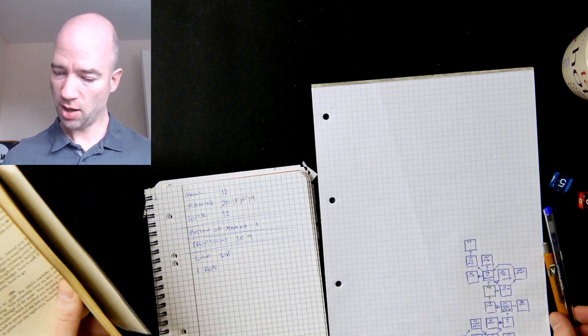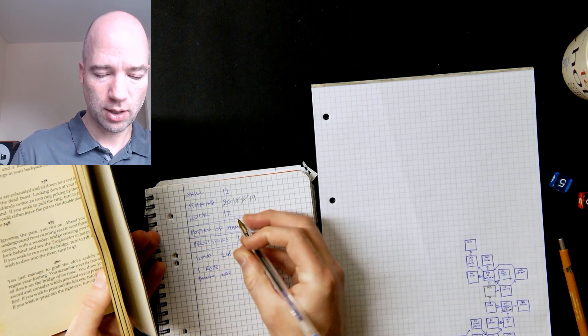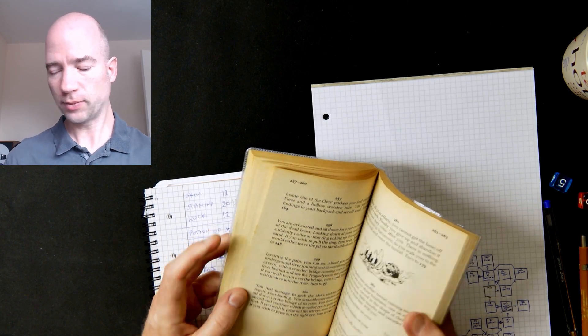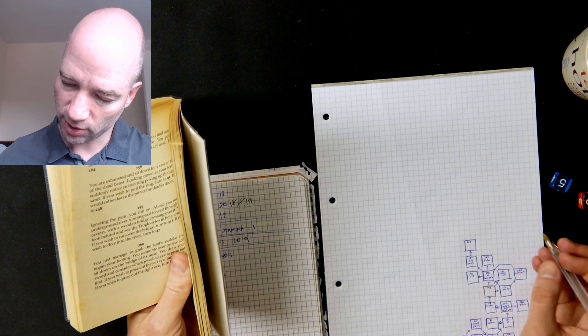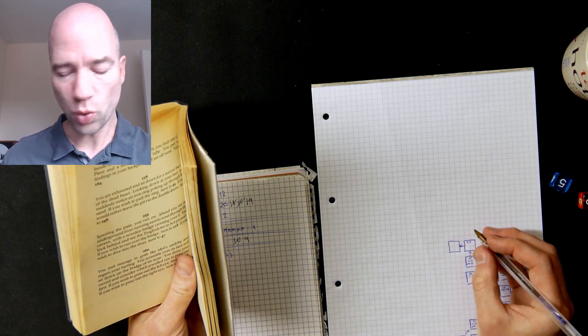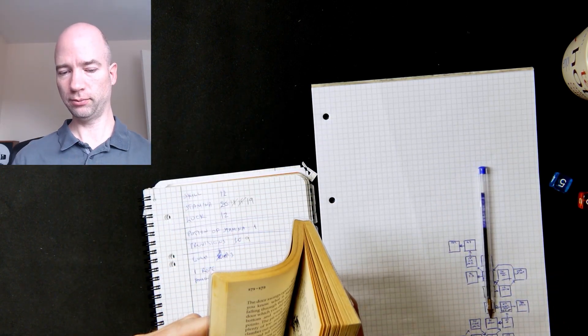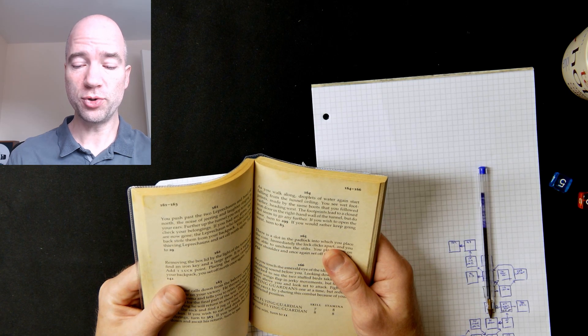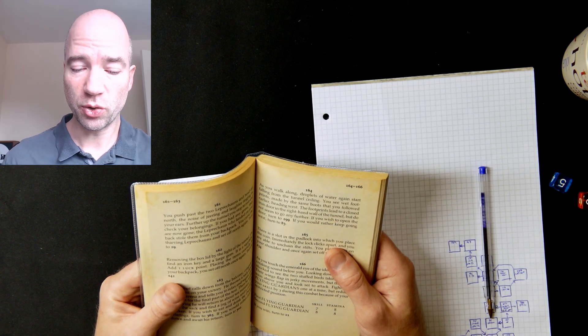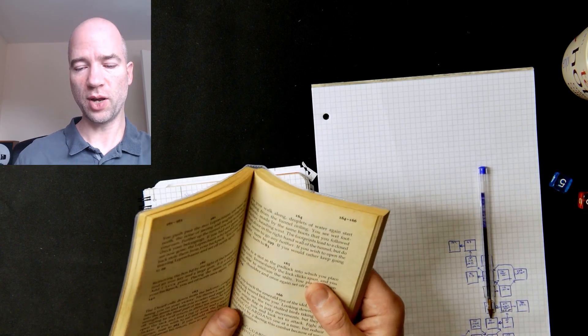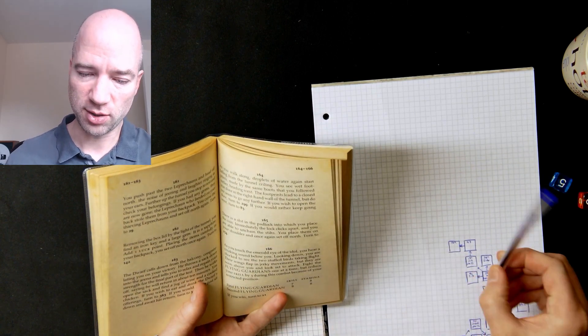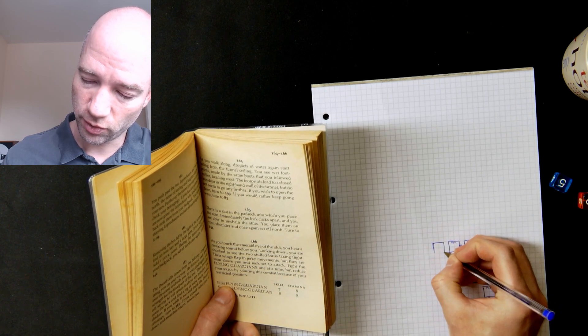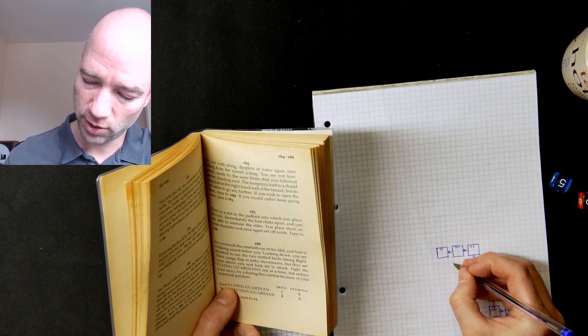Inside one of the orcs' pockets you find one gold piece and a hollow wooden tube. You put your findings in your backpack and set off west. So, hollow tube, okay. And I'm going up to 3 gold pieces. Turning west again. Okay, so maybe I should let my map go a little bit west as well. So 164.